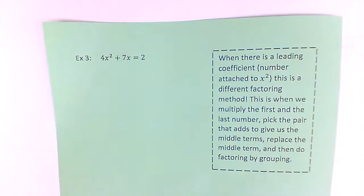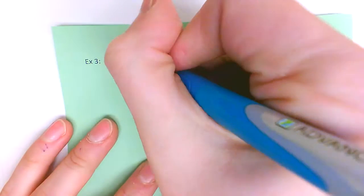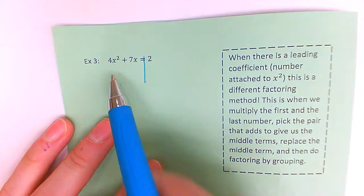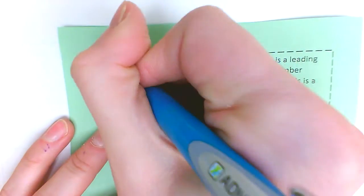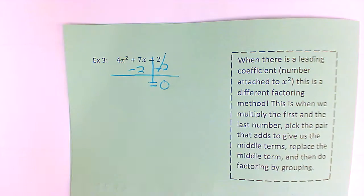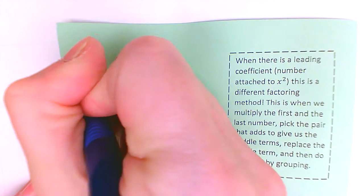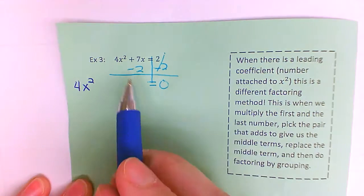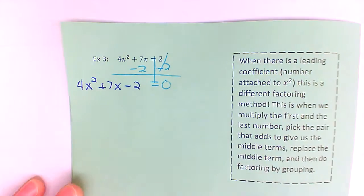Example three. I don't have equals zero on this problem either, so I'm going to move the two over to join the other terms. It's a positive two, so the opposite would be to subtract two from each side. It is very important to put the left side in standard form: the highest exponent is four x squared, that goes first. The regular seven x goes second, and the negative two is last.